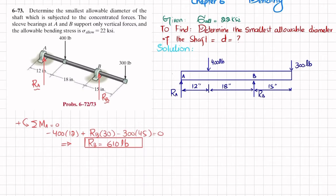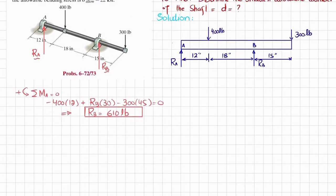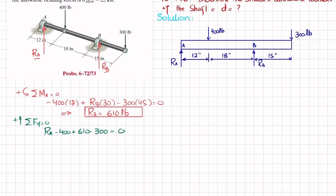Now using the sum of forces in the y-direction equals zero, with upward positive: Ra minus 400 plus Rb (610) minus 300 equals zero. From here Ra minus 90 equals zero, so Ra equals 90 pounds. Now we have both Ra and Rb.